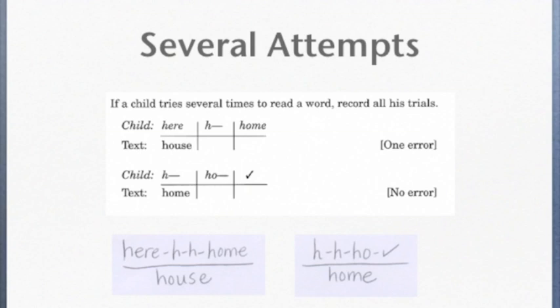In the second example, the child is sounding the word out: ha, ha, ho, home, and gets it and moves on. In that case, it is not an error, but it is important for you to record the sounding out because it helps us understand how the child is processing and attempting words.